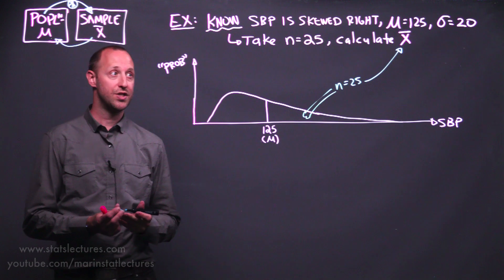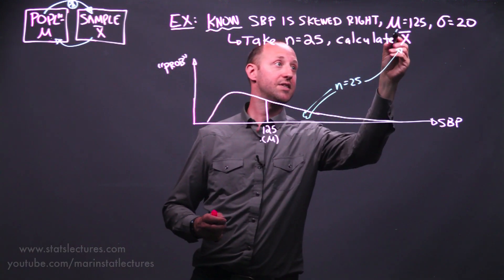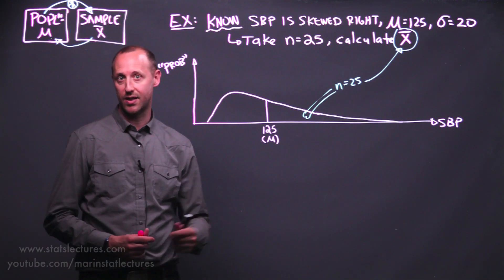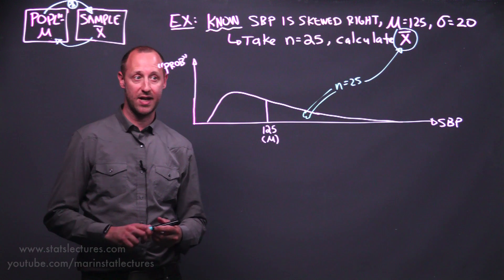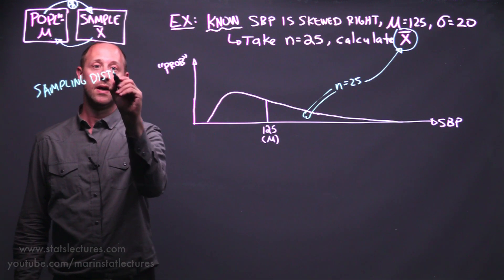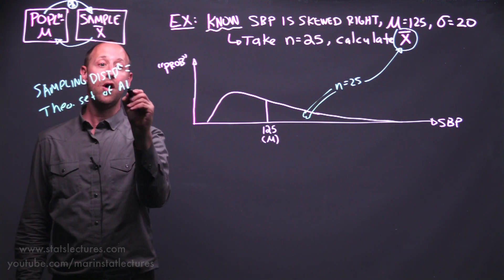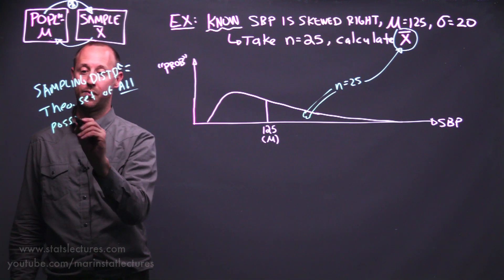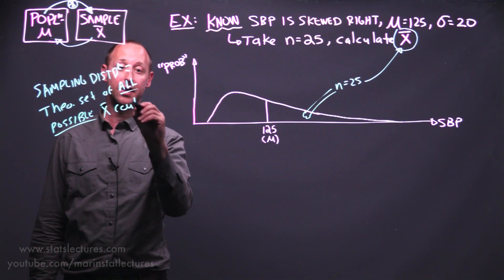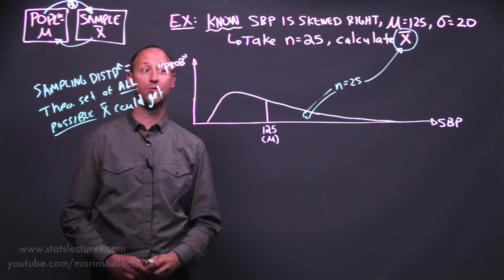In reality, we're just going to take one sample of size 25 and get one sample mean. But we learn to think of this sample mean as one of many we could have got — we could have ended up with a slightly different set of data, which would have given us a different estimate. This builds the idea of a sampling distribution: the theoretical set of all possible estimates or sample means we could get. In reality we only end up with one, but we think of it as one of many we could have possibly got.